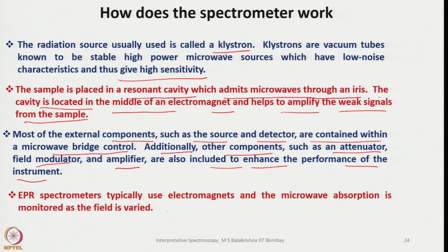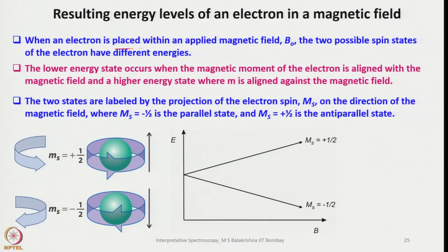EPR spectrometers typically use electromagnets and microwave absorption is monitored as the field is varied. When an electron is placed within an applied magnetic field B-naught, the two possible spin states of the electron have different energies. In the absence of a magnetic field, the spin states have the same energy, but once placed in a magnetic field, they possess two different energies.